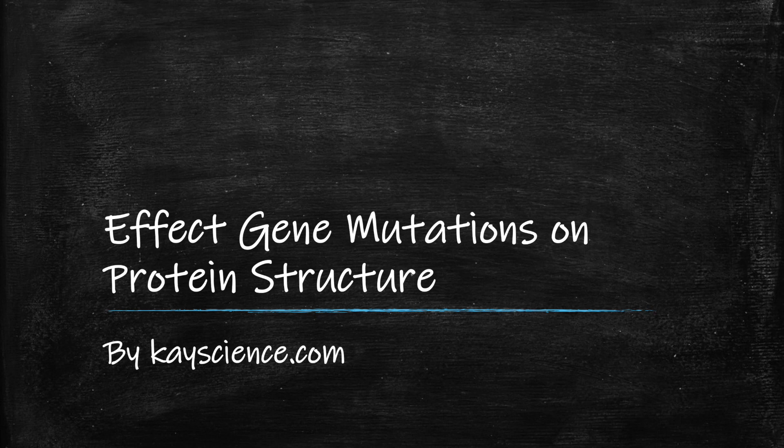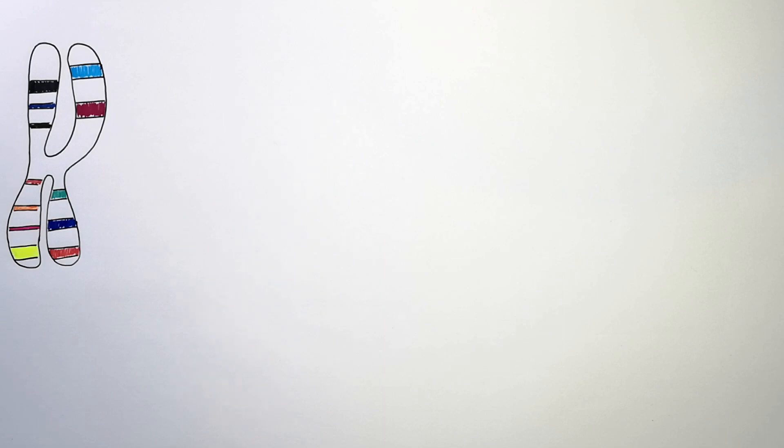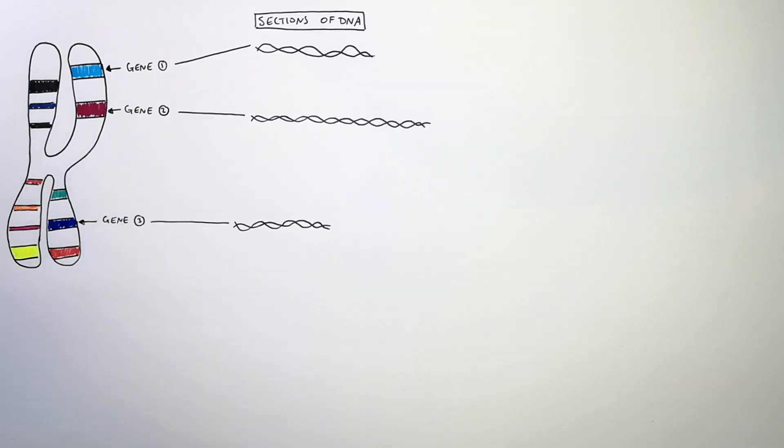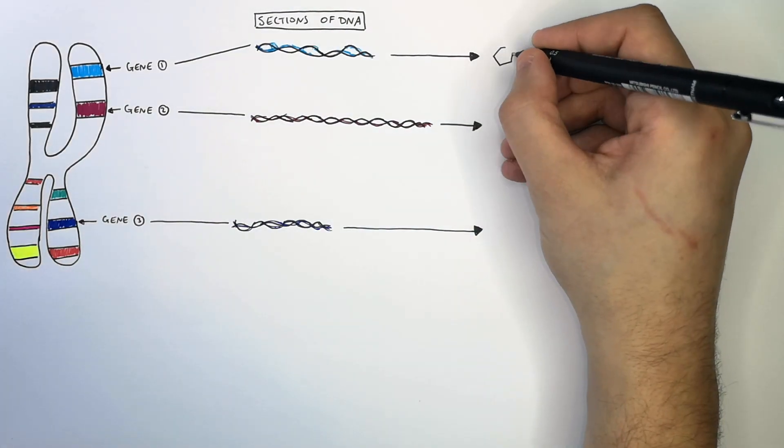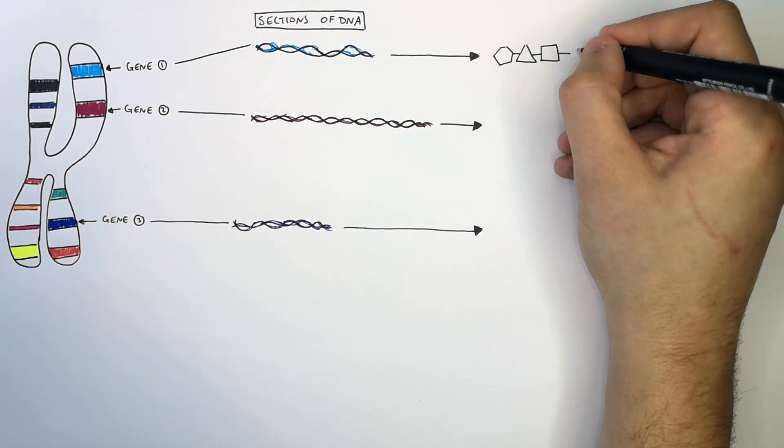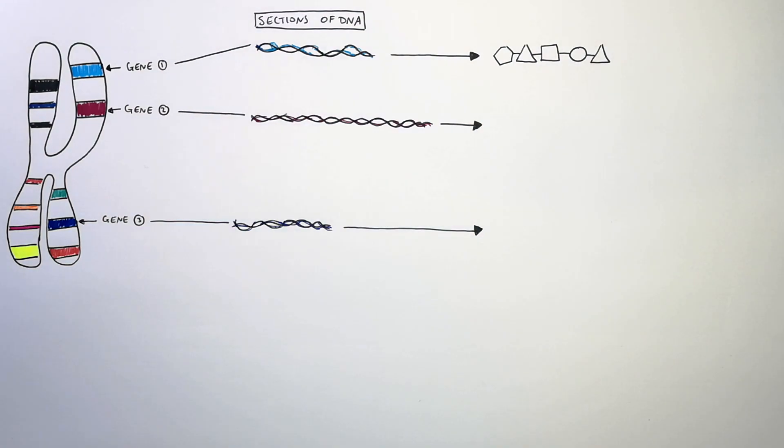The Effect of Gene Mutations on Protein Structure by CaseScience.com. On each chromosome you find thousands of genes. Genes are short sections of DNA that code for proteins. So each section of DNA codes for a specific protein.